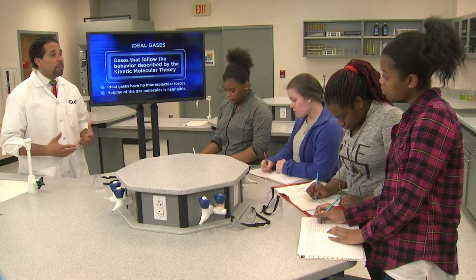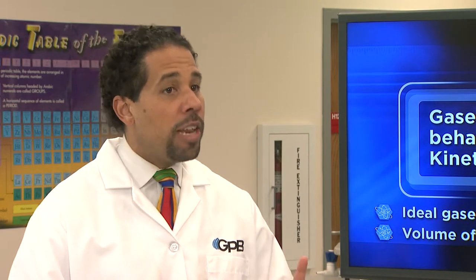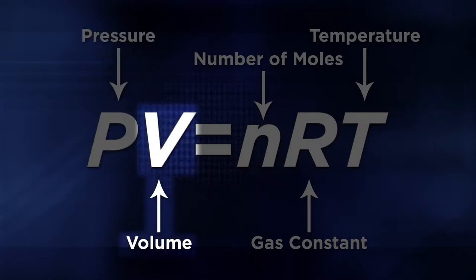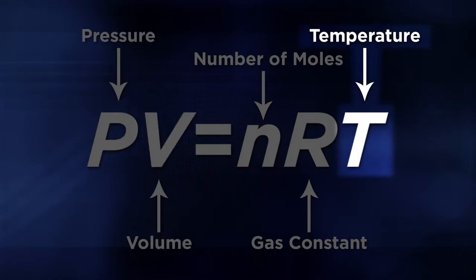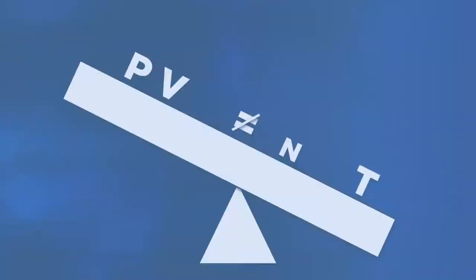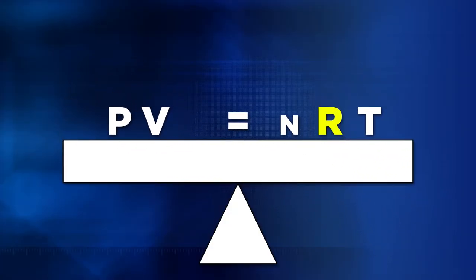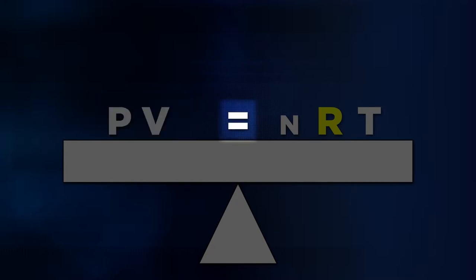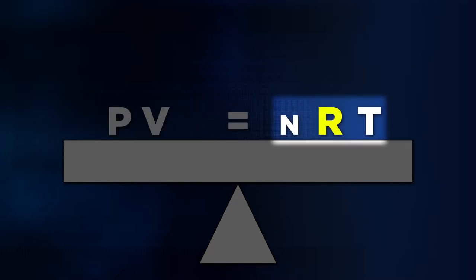After conducting many experiments with gases under a variety of conditions, scientists developed a simple mathematical equation that predicts the behavior of an ideal gas. This equation, called the ideal gas law, describes the behavior of a gas using four variables: pressure P, volume V, temperature T, and amount or number of moles of the gas N. R, called the universal gas constant, serves as a proportionality constant — a multiplying factor that makes pressure times volume, PV, equal to moles times temperature, NT.